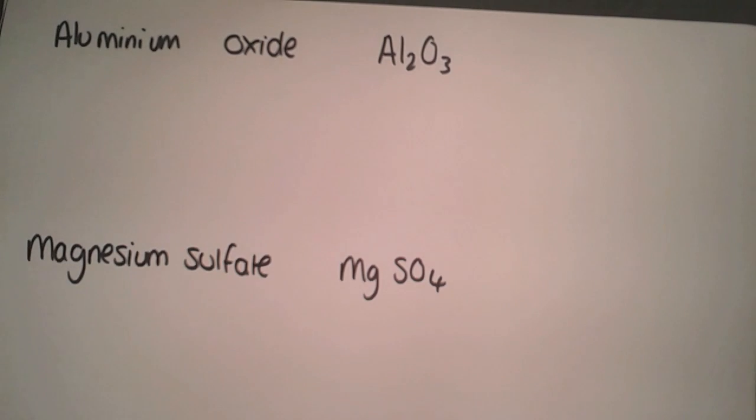This video is going to look at calculating gram formula mass. To calculate gram formula mass, you need to write out your chemical formulae, or use the one that's been given to you, and use the page in your data book that deals with relative atomic masses of elements.